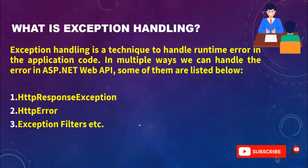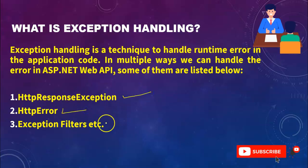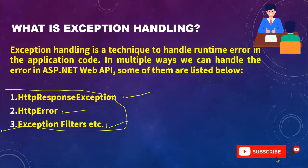What is exception handling? Exception handling is a technique to handle runtime errors in the application code. In ASP.NET Web API we can handle errors in multiple ways: using HttpResponseException, HttpError, and Exception Filter. Using these three approaches we can handle exceptions in our .NET Web API.